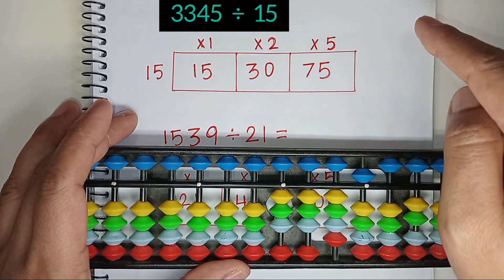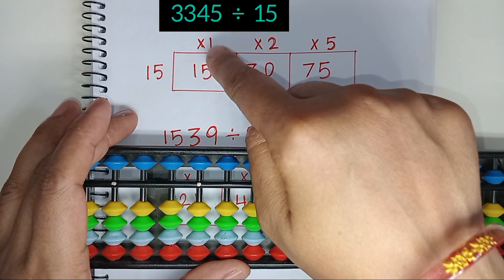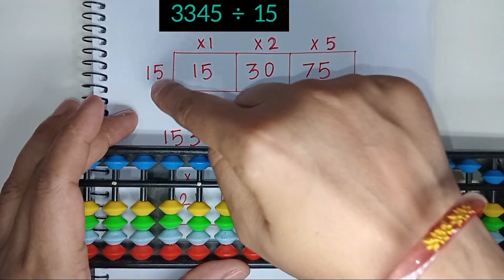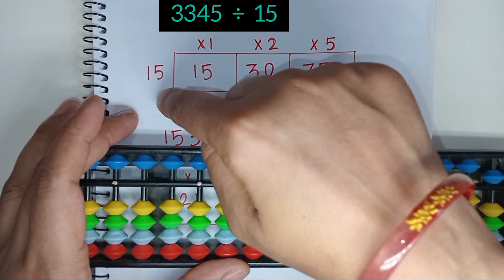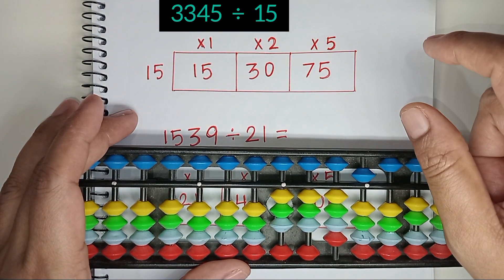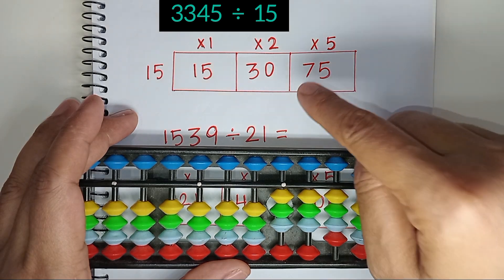As our divisor is double digit, we need to make a multiplication table with only 3 multiples: 1, 2, and 5. 15 times 1 is 15. 15 times 2 is 30. 15 times 5 is 75. You need to make multiplication tables from 11 to 99 in the same way. That will help you to solve division in Abacus faster.